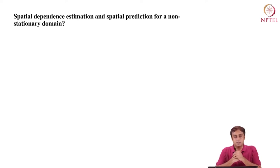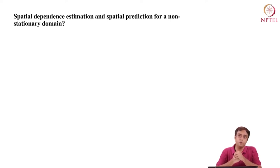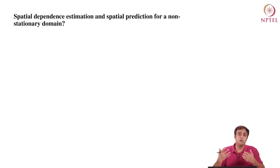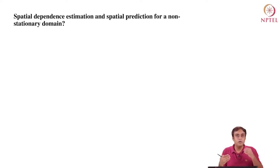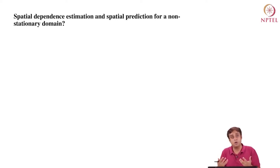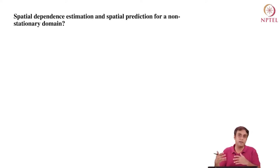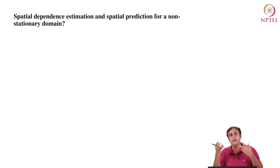I have this slide titled 'Spatial Dependence Estimation and Prediction for a Non-Stationary Domain.' We are going to work with an example, and in this example, we are going to assume that we are starting with a non-stationary domain. We are working with a real-world problem — it's not going to be a textbook representation; it's going to have issues of its own. As an analyst, how do we go about tackling these issues systematically, eventually getting to a point where we are using a variogram model to provide a spatial prediction?